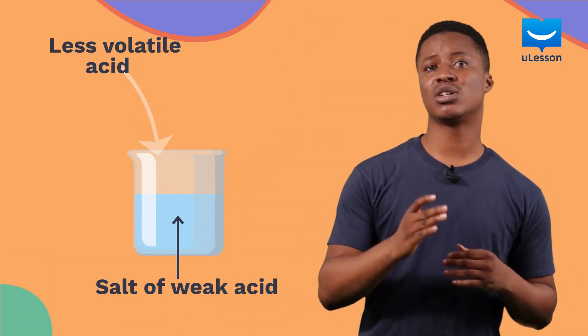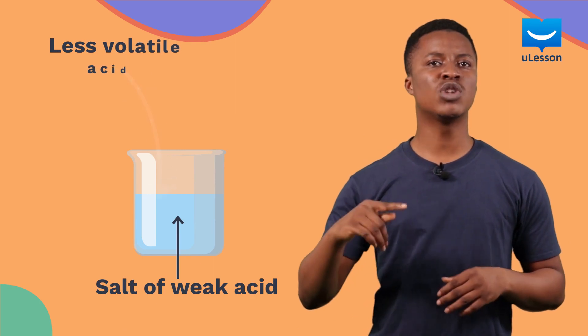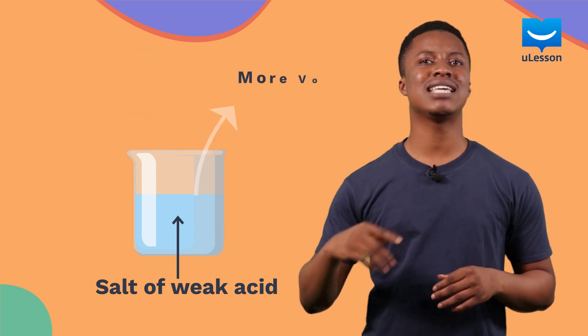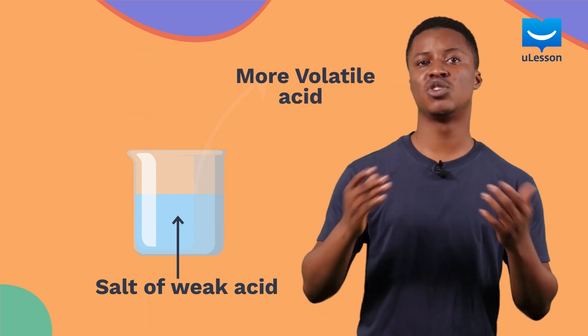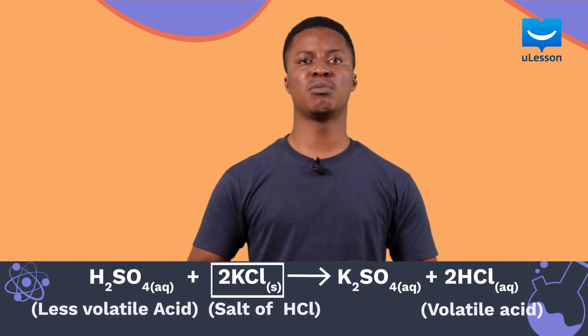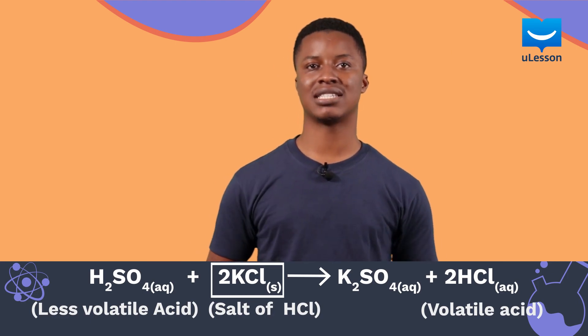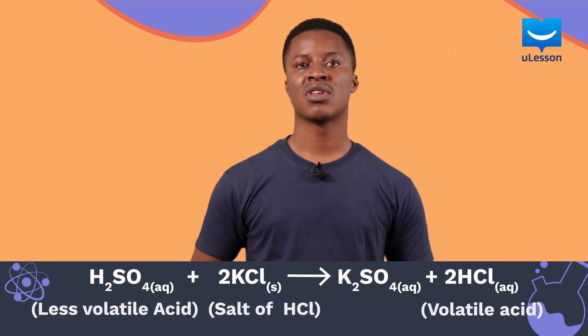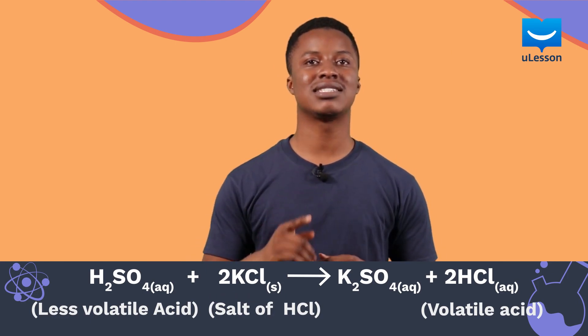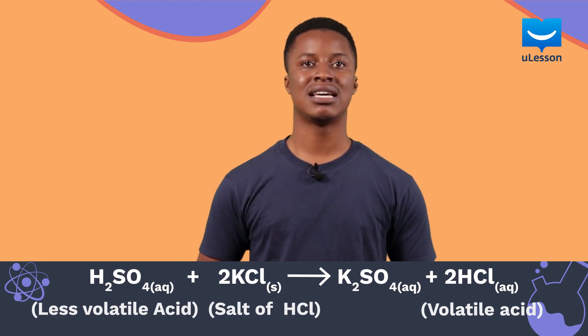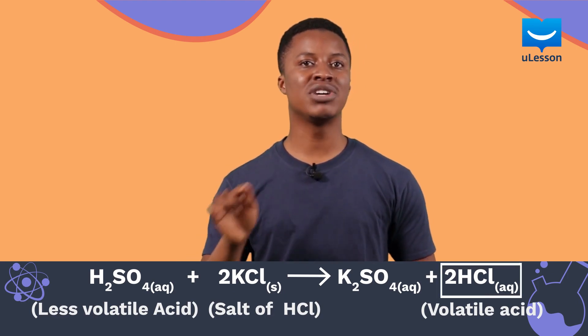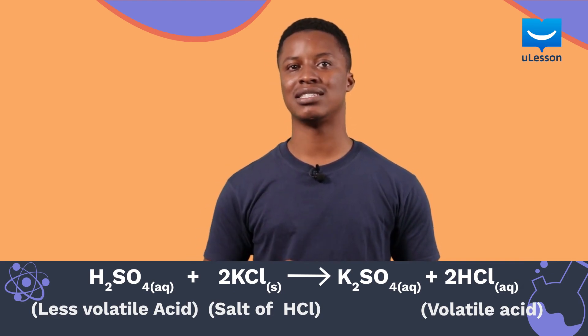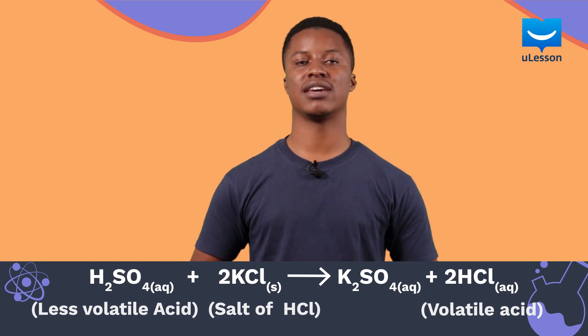A less volatile acid such as tetraoxosulfate 6 acid can also be used to displace a more volatile acid like hydrochloric acid out of its salt. To demonstrate this, we can use potassium chloride, which is a salt of hydrochloric acid. When tetraoxosulfate 6 acid reacts with potassium chloride, hydrochloric acid, which is the more volatile acid, would be displaced as shown here.